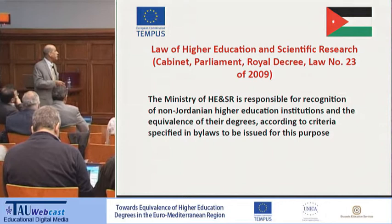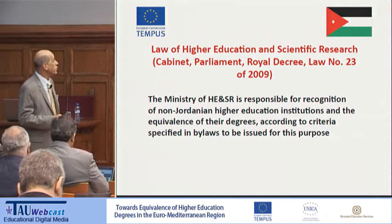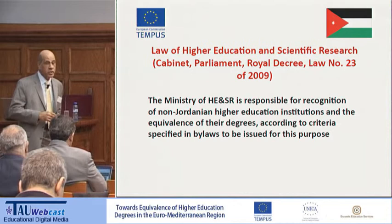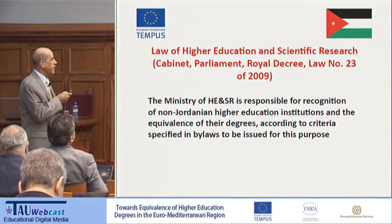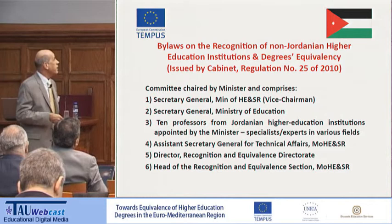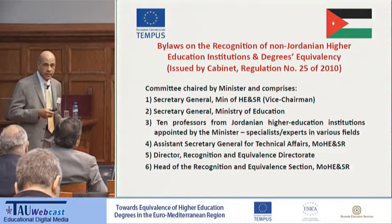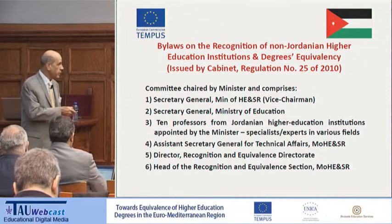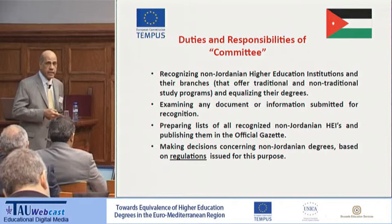The framework for regulations in Jordan: we have a Law of Higher Education and Scientific Research. Making law in Jordan is a very complex process — it has to go through the cabinet, the council of ministers, then parliament, and finally it is issued by royal decree by the king, which takes a very long time and is not easy to change. In the law, there is an article stating that the ministry is responsible for this job.